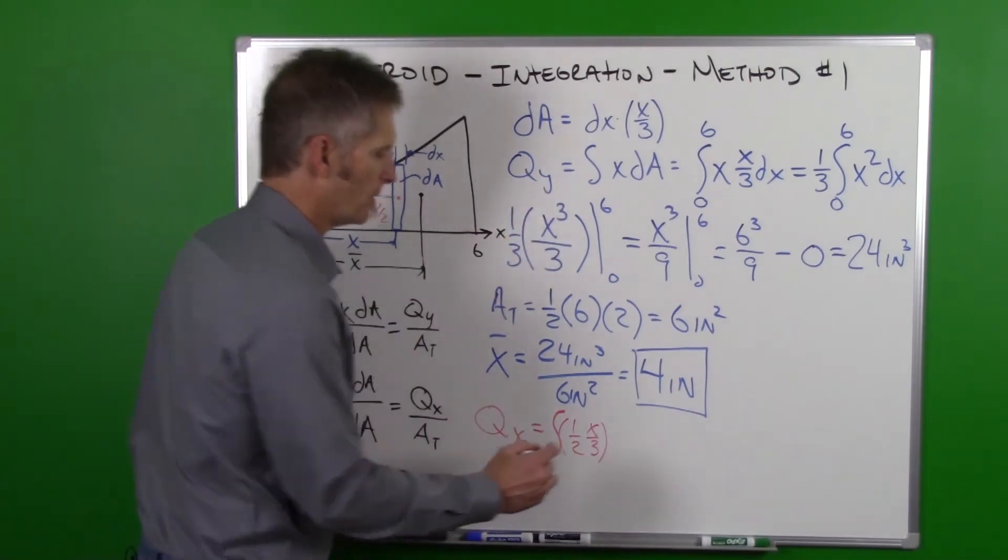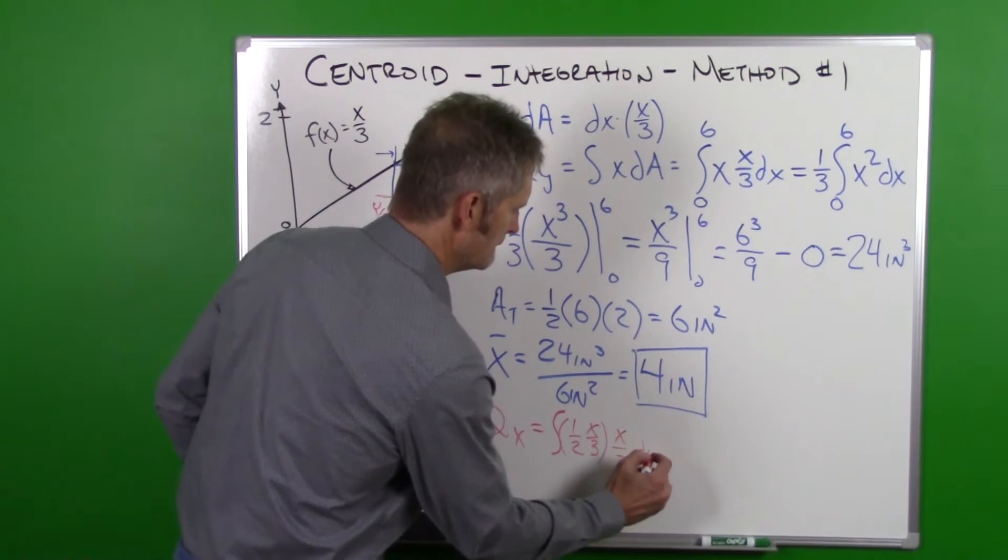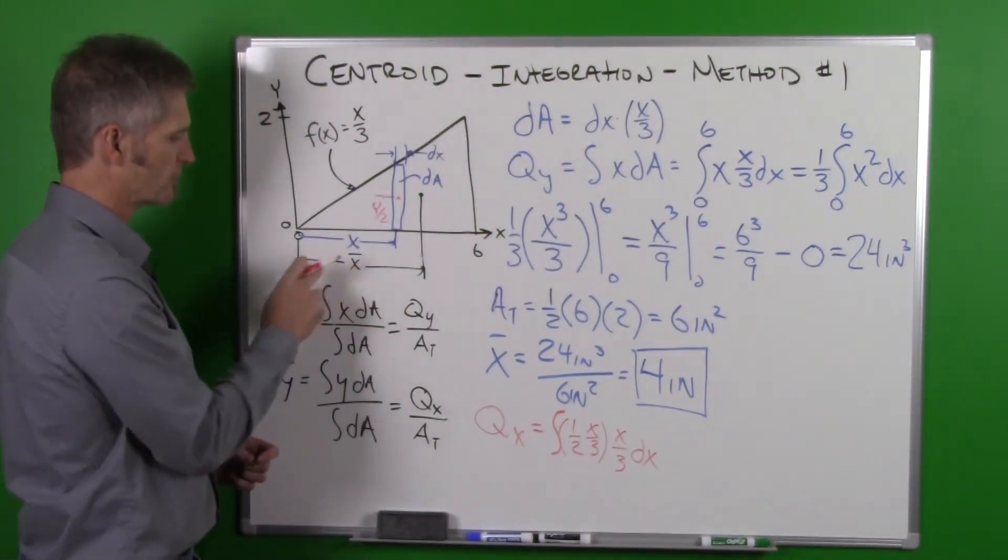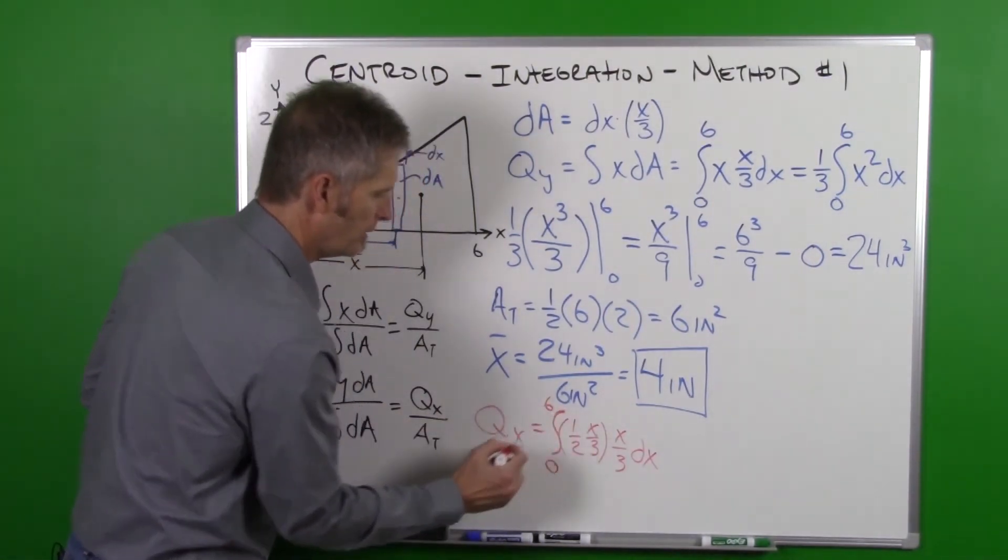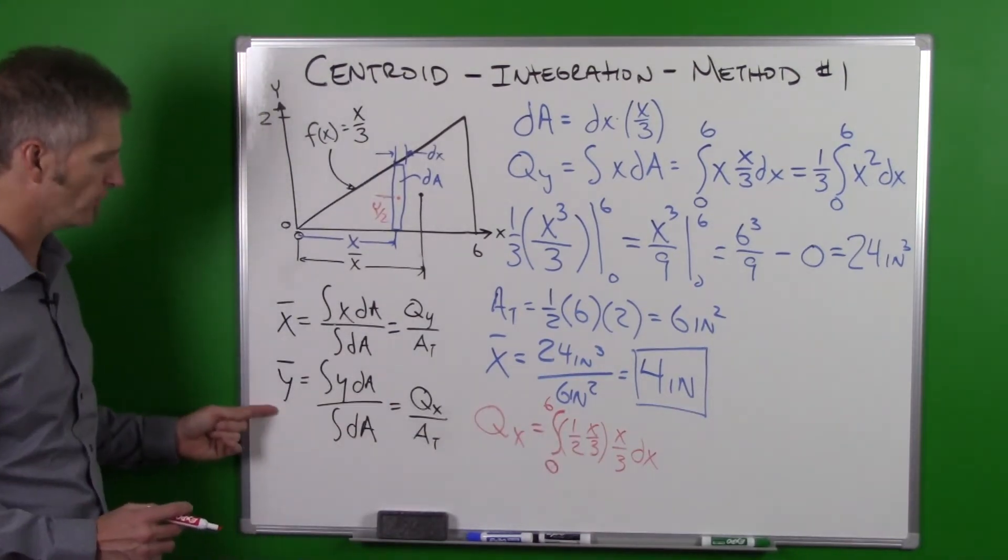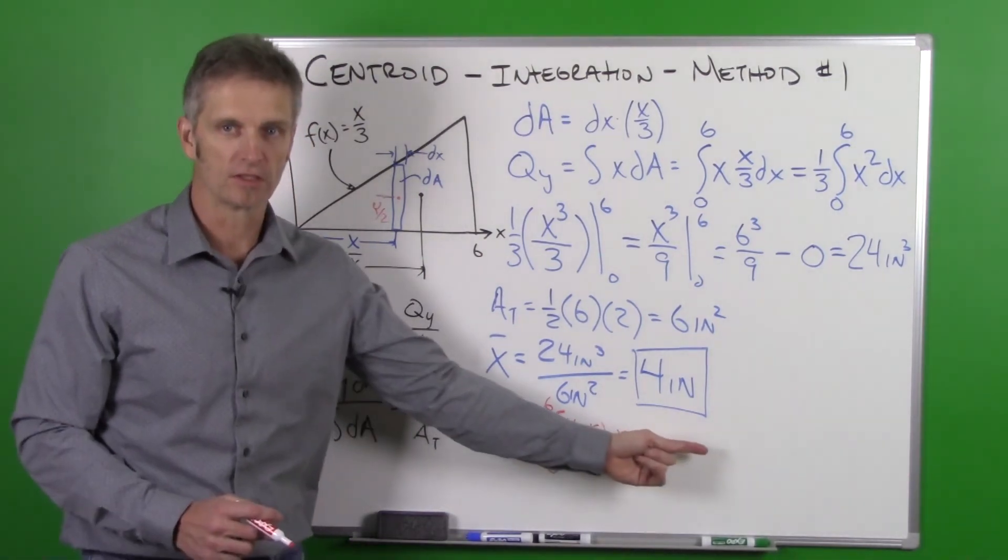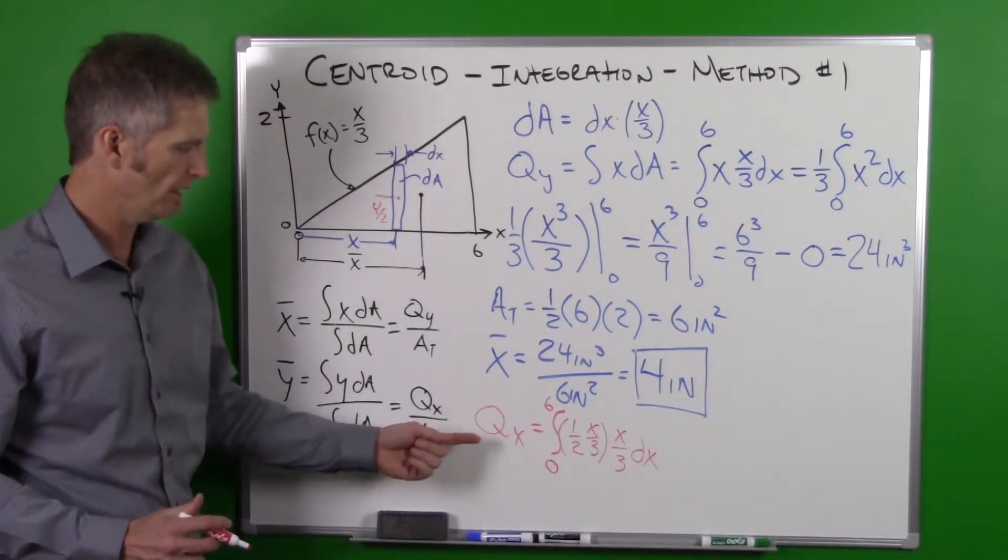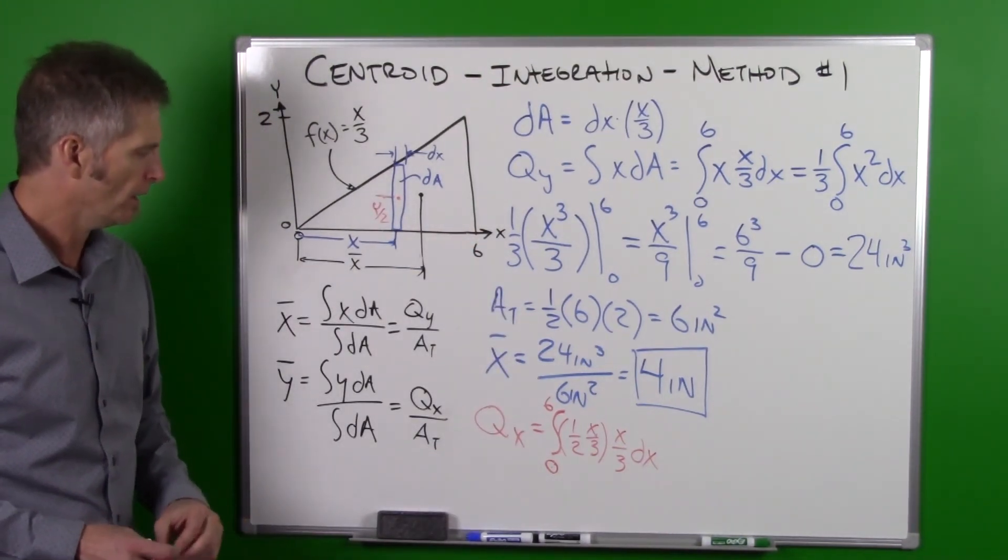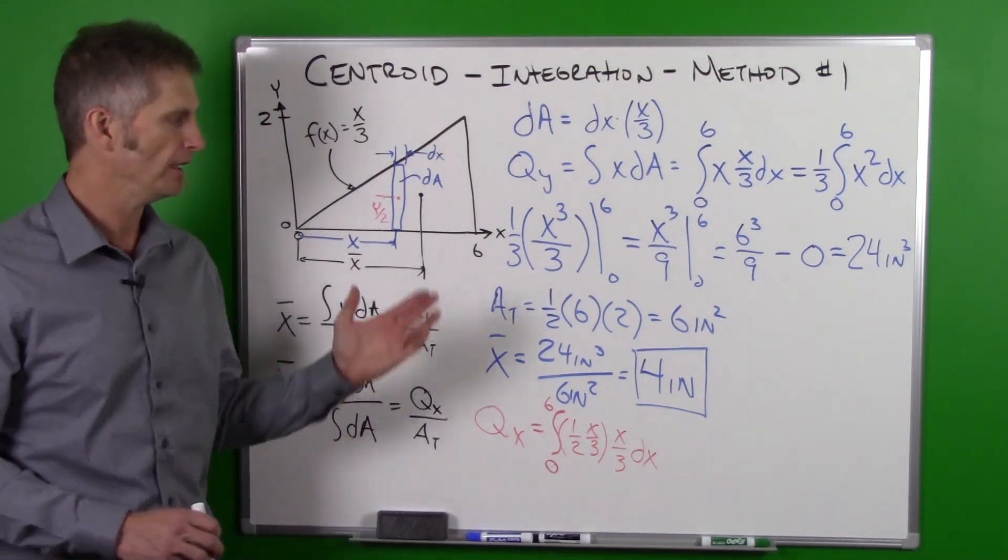Our dA is still the same as before, which is x divided by 3 dx, and we're going to evaluate this again, we're integrating in the x direction, limits of integration 0 to 6. So now this is the only difference here but we can do the y bar. Area total is going to be the same, we go through this calculus to calculate this all out, but it's basically the same operation. So again, integration method for calculating the centroid of a triangle.